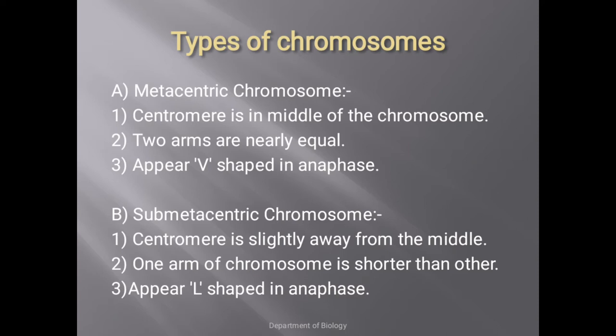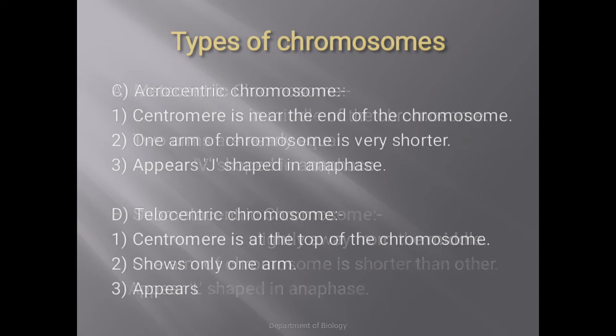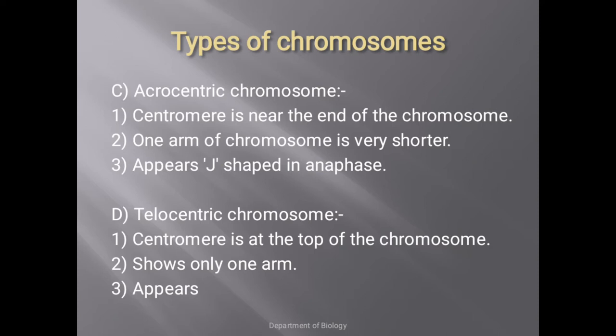In submetacentric chromosomes, the centromere is slightly away from the middle, so one arm is longer than the other, and the chromosome appears L-shaped in anaphase. In acrocentric chromosomes, the centromere is present nearly at the end, so one arm is very short and the other is very long, appearing J-shaped in anaphase. In telocentric chromosomes, the centromere is at the very end, only one arm is visible, and it appears rod-shaped.